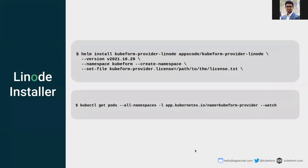Today we are going to do the demo for the Linux cloud provider. For this, we need to install the Qfirm Linode operator — this is the Linode installer. You can visit our official website for installation details, but the summary is here. We can use the Helm install command to install the Qfirm Linode controller: Helm install Qfirm provider Linode, fetching it from our Helm chart repo at the latest version.